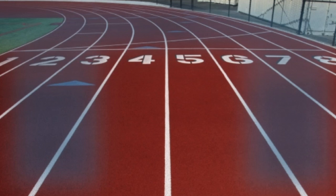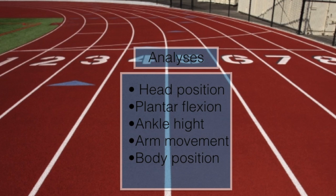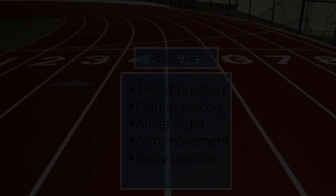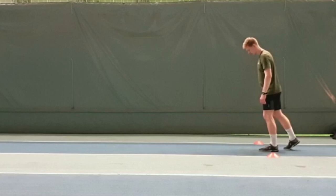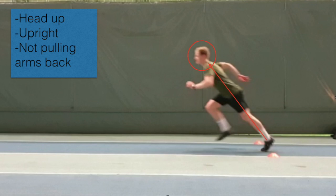For the first athlete in speed, we will be analyzing the head position, plantar flexion, ankle height, arm movement, and body position, and conclude what is the most likely underlying cause of this. We can also see that he does not aggressively pull his arms back, which will also be shown in the front view.